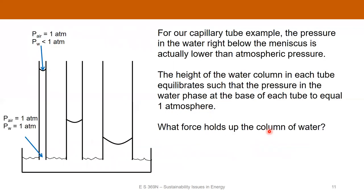Going back to our capillary tube example, we know there's going to be a pressure discontinuity across the interface. The pressure in the air outside is roughly one atmosphere. If it's one atmosphere down at the base, it's very slightly less than one atmosphere up at the top of the tube. That means that as you cross from the air into the water, the pressure in the water is actually less than one atmosphere. The pressure in the water then increases linearly due to the weight of the water to be equal to one atmosphere down at the base. So the water phase pressure is sub-atmospheric at the top, and one atmosphere at the bottom.